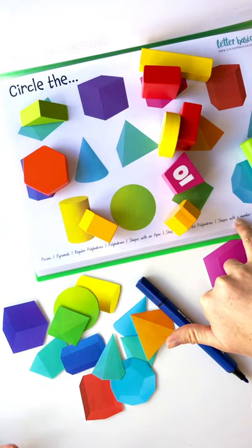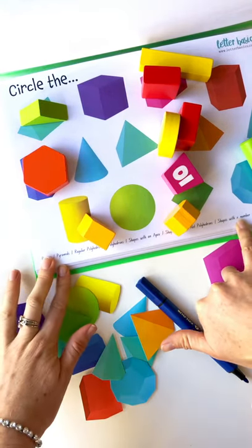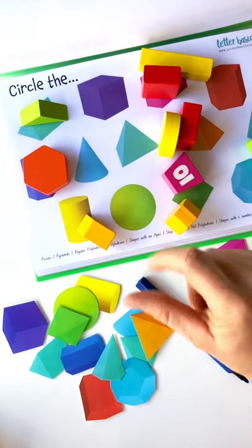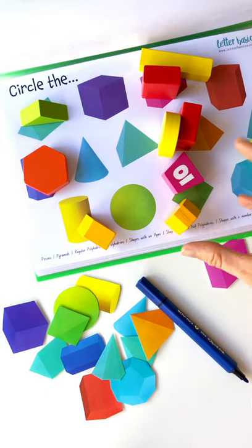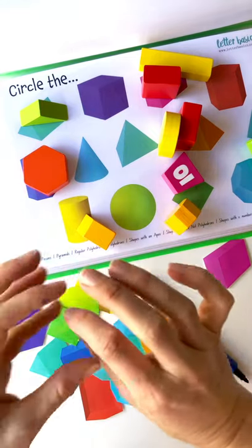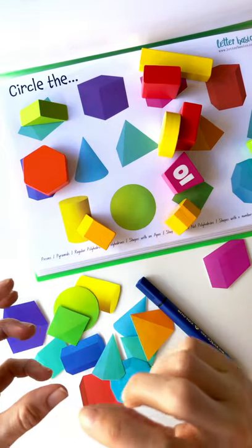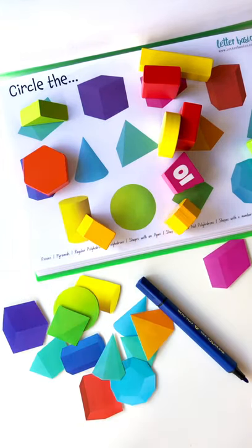So say you wanted to find shapes with 12 vertices and go and circle those ones. Yeah, it's really good if you've got a shapes or blocks pack as well so you can actually see and manipulate the shapes, turn them around and look at them.